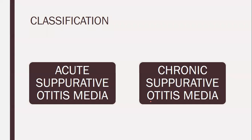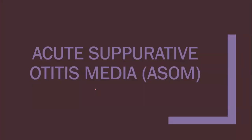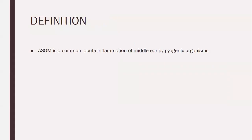Classification is very important. Otitis media is divided into Acute Suppurative Otitis Media and Chronic Suppurative Otitis Media, called ASOM and CSOM. In this session, I will be dealing with only ASOM — Acute Suppurative Otitis Media. It is an acute inflammation of the middle ear by pyogenic organisms. It is a common acute infection of the middle ear caused by pyogenic organisms.